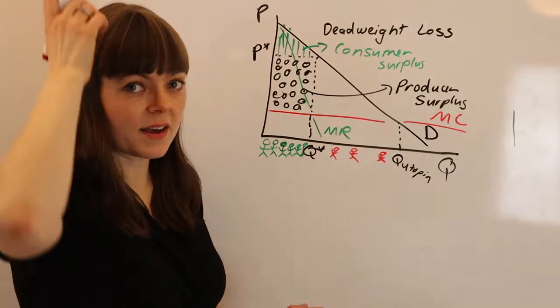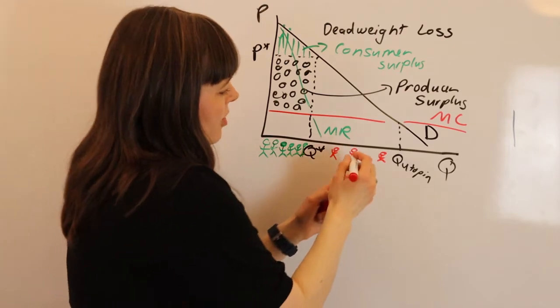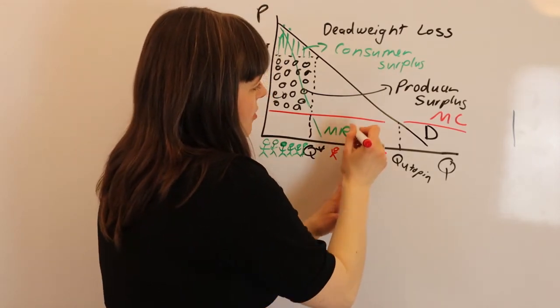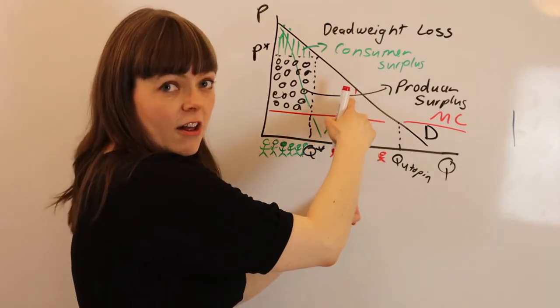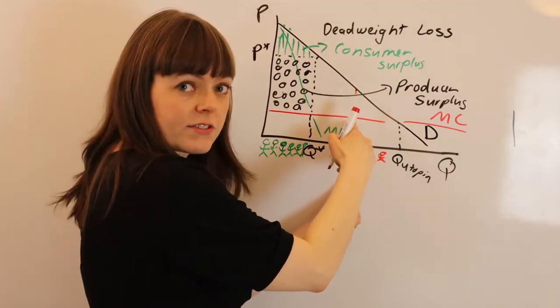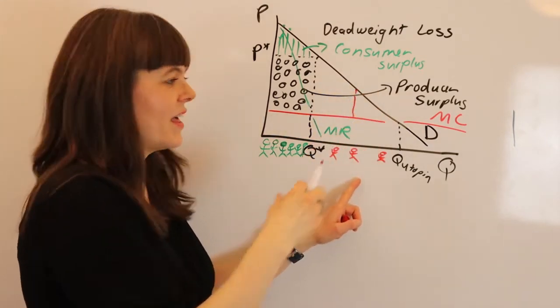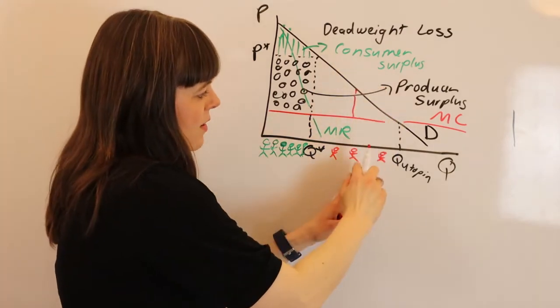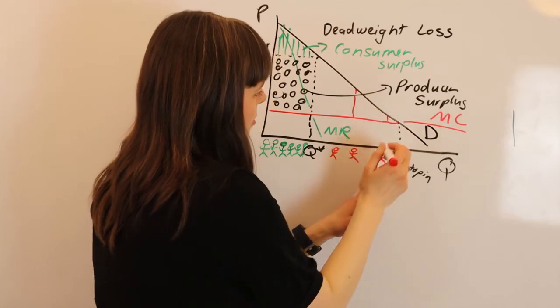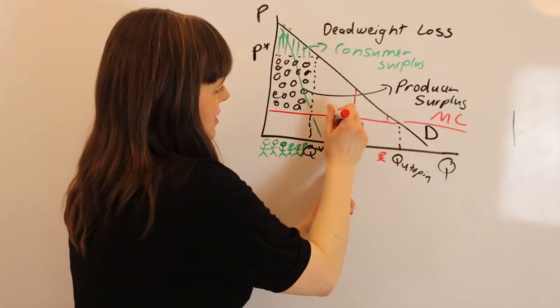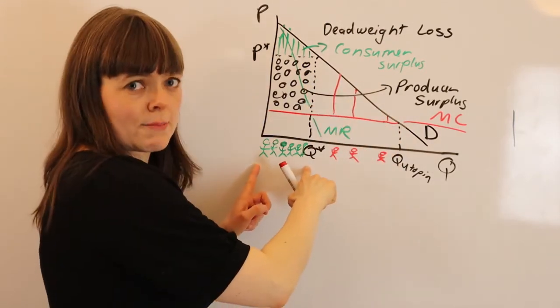All of these other people would get products produced at marginal cost, sold at marginal cost. For each of these people, this person values the product at $50. They're paying $12, which is the cost of production, so they get a $38 surplus. We do that for every single person who gets the product in the utopian world. I've just picked three random people - you do this for every single person, including all of these green people over here.